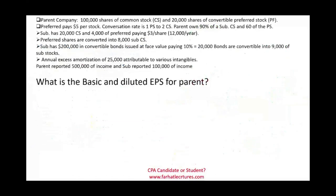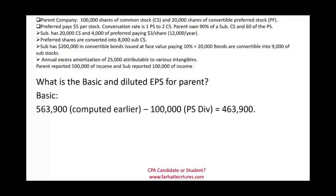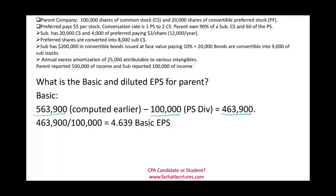Now let's compute the parent's basic EPS. Start with the $563,900 net income attributed to the parent, then deduct $100,000 in preferred dividends, giving $463,900 in the numerator. Divided by 100,000 shares outstanding, the parent's basic EPS is $4.639.